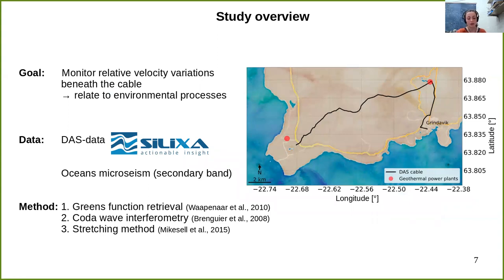Our goal is to monitor relative velocity variations beneath the cable over time and subsequently relate the velocity variations to environmental processes such as earthquakes, volcanic activity, and weather impacts. For this purpose, we use the continuously recorded energy of the ocean's microseism. First, we retrieve the Green's functions between different station pairs by cross-correlating the noise traces. Then we apply interferometric techniques to enhance the signal-to-noise ratio of the coda waves. Lastly, we use the stretching method to measure differences in arrival times of the scattered waves in the coda.